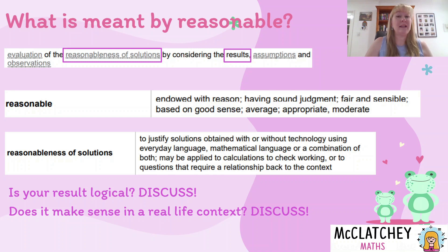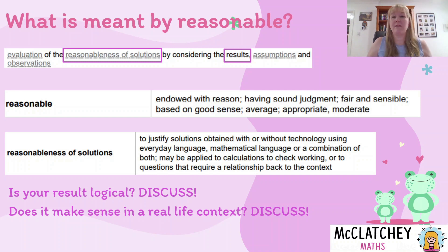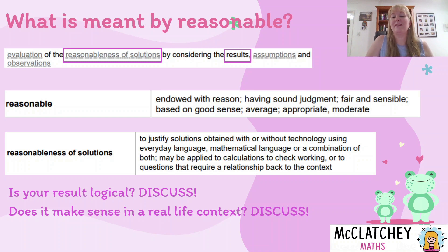Think about whether your result makes sense in a real life context. Back to arm length and leg length — if you measured young children, they are still growing, and we know children grow at different rates. So weak correlation among children might actually be expected. But could you then apply a children's model to adults — say, to identify femur bones found on the ground? That probably wouldn't be appropriate because children haven't finished growing, whereas adults have.